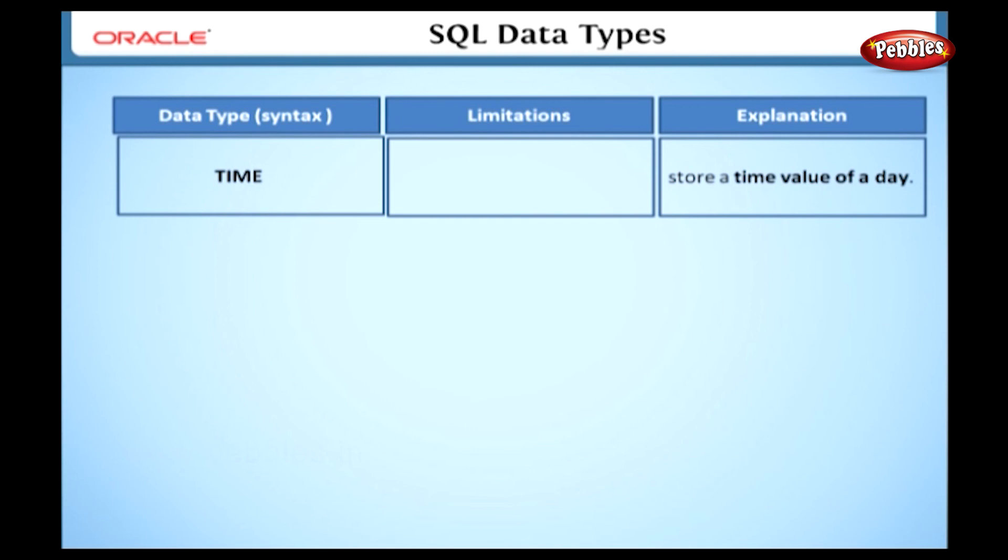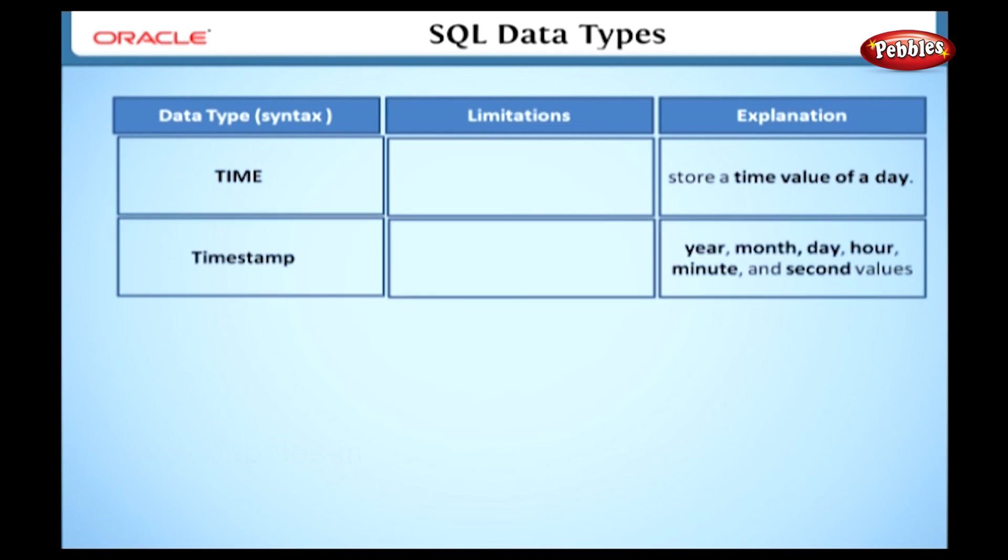Time. This data type is used to store a time value of a day. Timestamp. It stores the year, month, day, hour, minute, and second values. Here we can divide the seconds up to 9 fractional seconds precision.